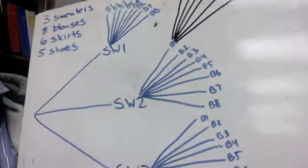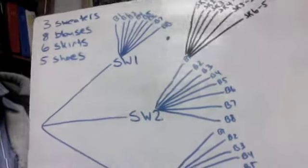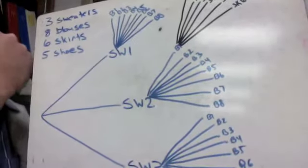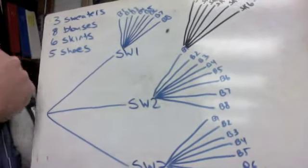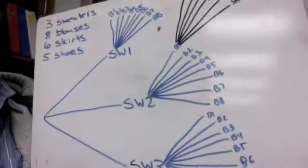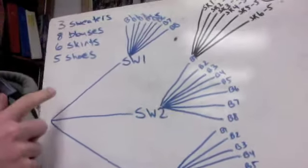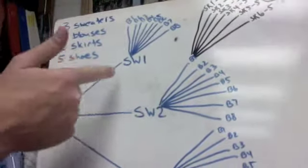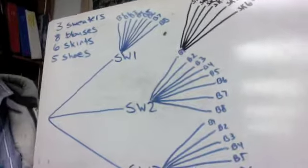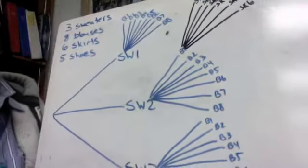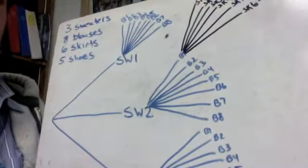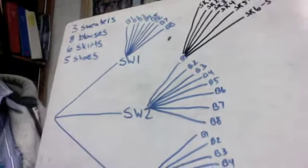And I started off with all good intentions with my tree diagram. And I just basically ran out of space. So I'm going to have to do a little, not really estimating, but we'll talk about it here. You'll figure it out. So, to start with, I did start with the 3 sweaters. And maybe I made this too big, which made the rest of it not enough room. But I have my 3 sweaters. Off of each sweater, I've got 8 choices for blouses. Here's where I kind of ran out of room.